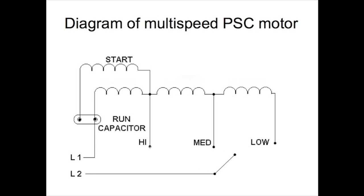This switch, if it goes to high, then it simply goes right through that short portion of the run winding. That's going to be the highest speed because it has the lowest resistance.